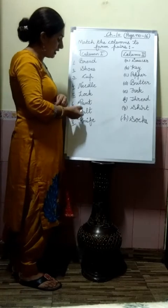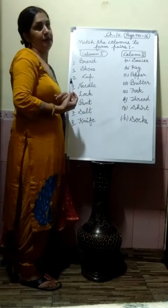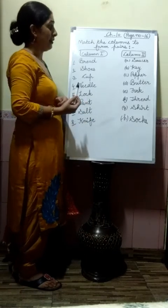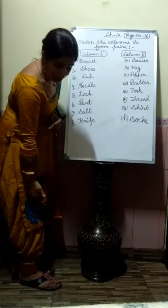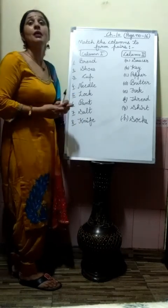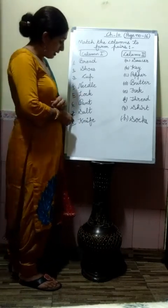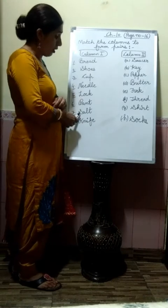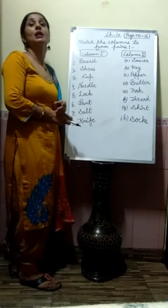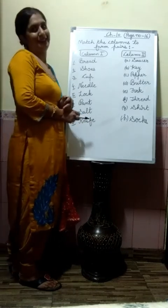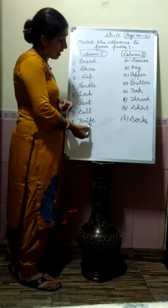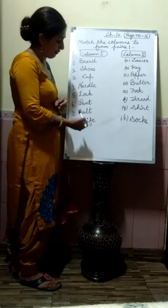Sixth word is pant — P-A-N-T — pant. That is the pant you wear. Seventh word is salt — S-A-L-T — salt. Salt means namak. Eighth word is knife — K-N-I-F-E — knife.